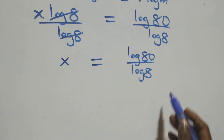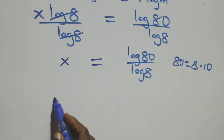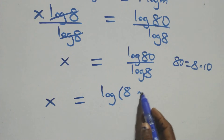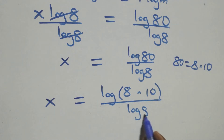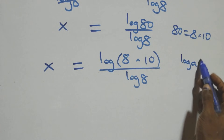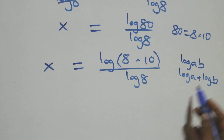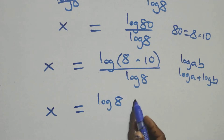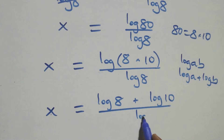The next step: we can rewrite 80 as 8 times 10, which implies we have x equals to log(8 × 10) over log 8. From the product rule of logarithms, log(a·b) can be written as log a plus log b. So we have x equals to (log 8 + log 10) over log 8.